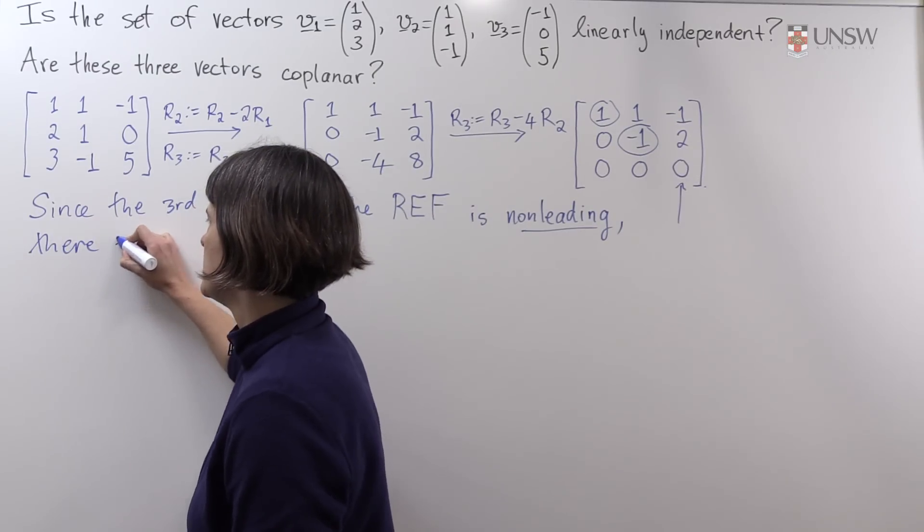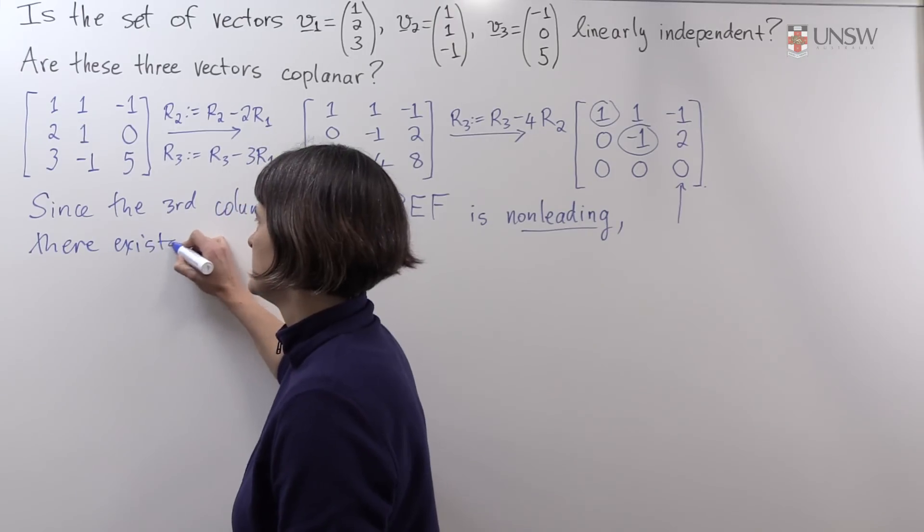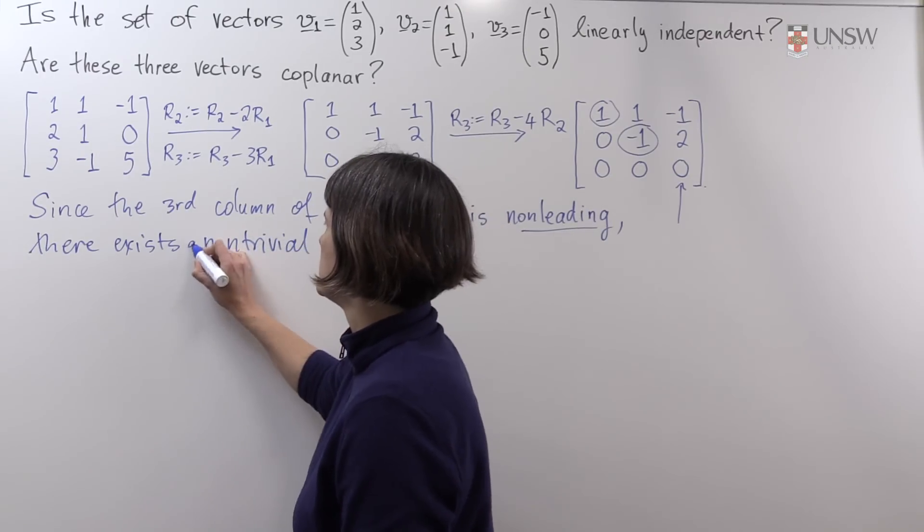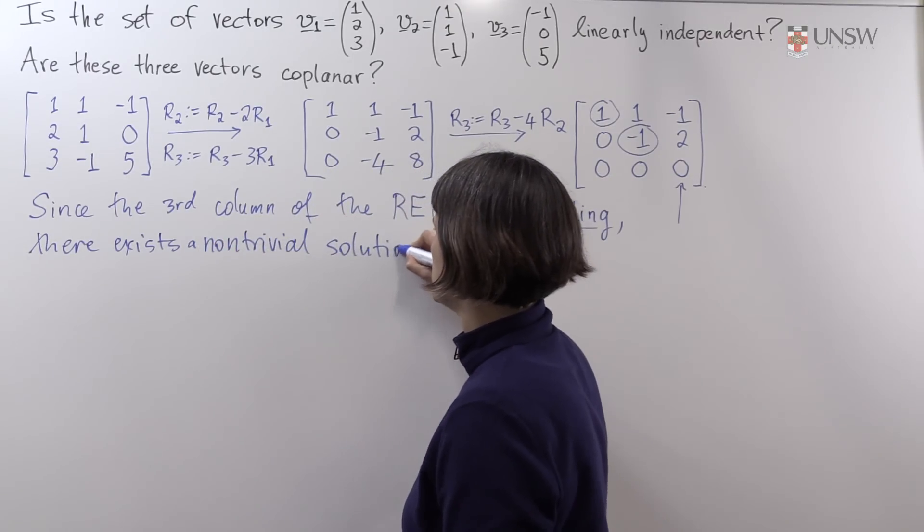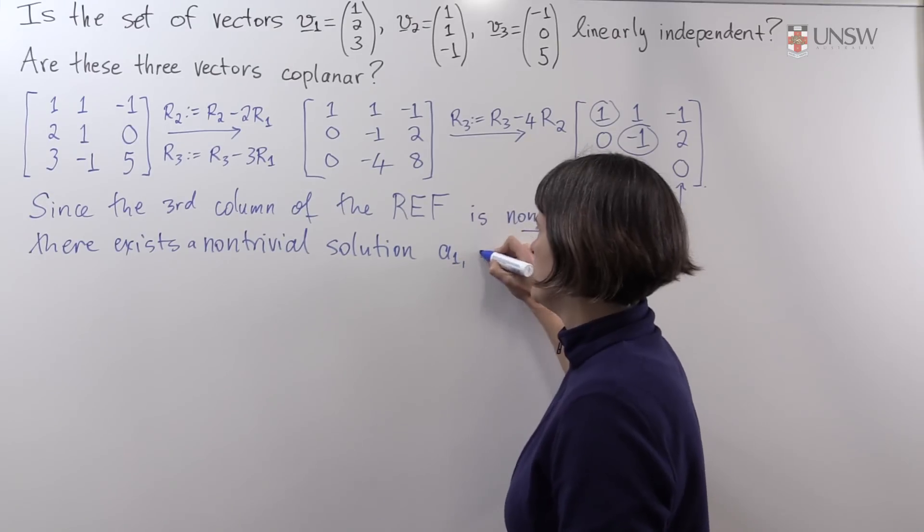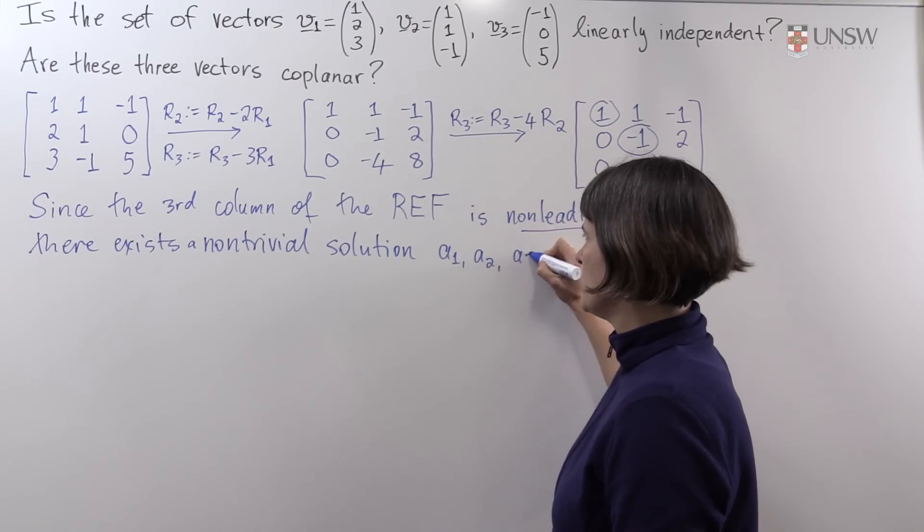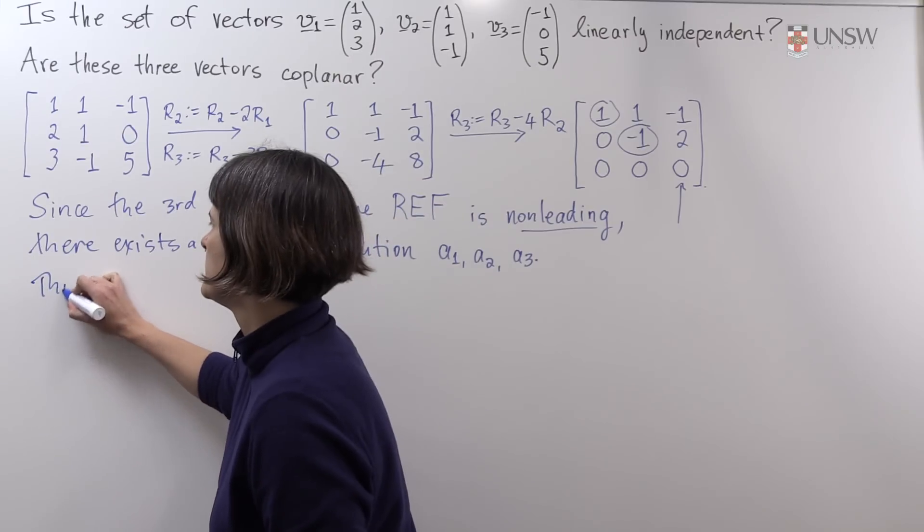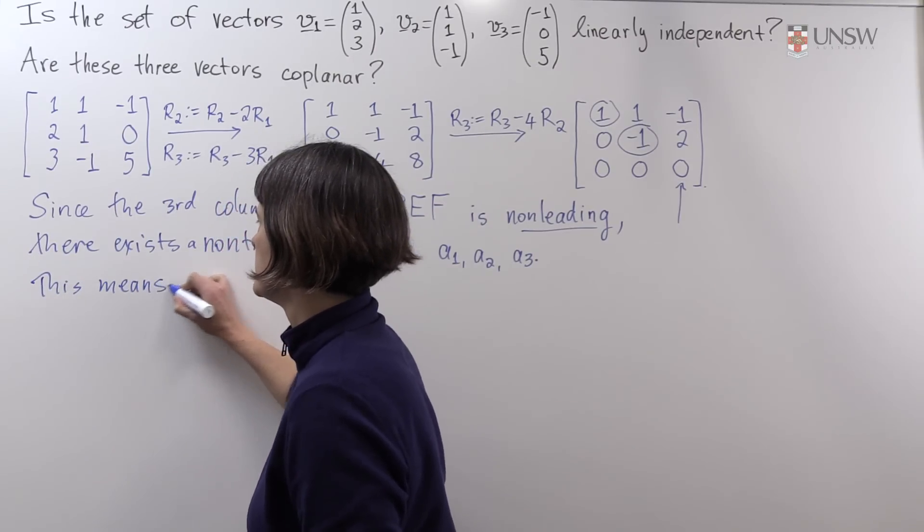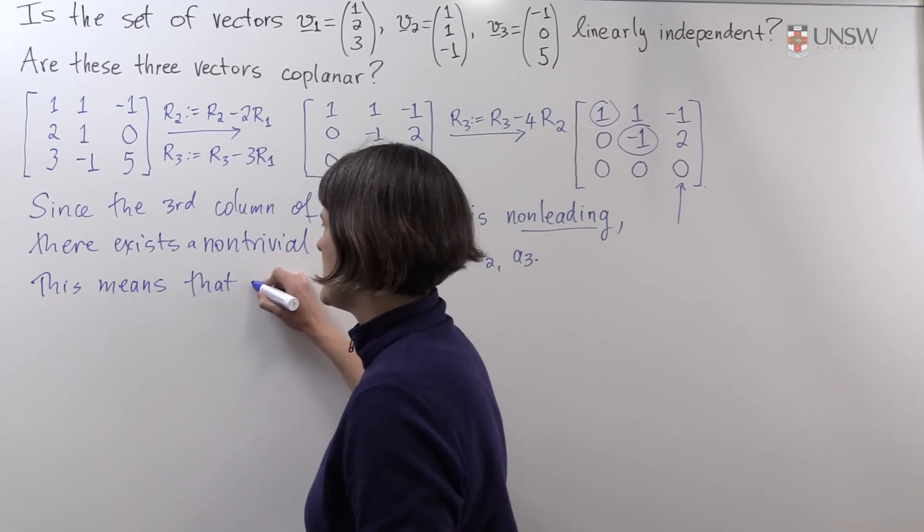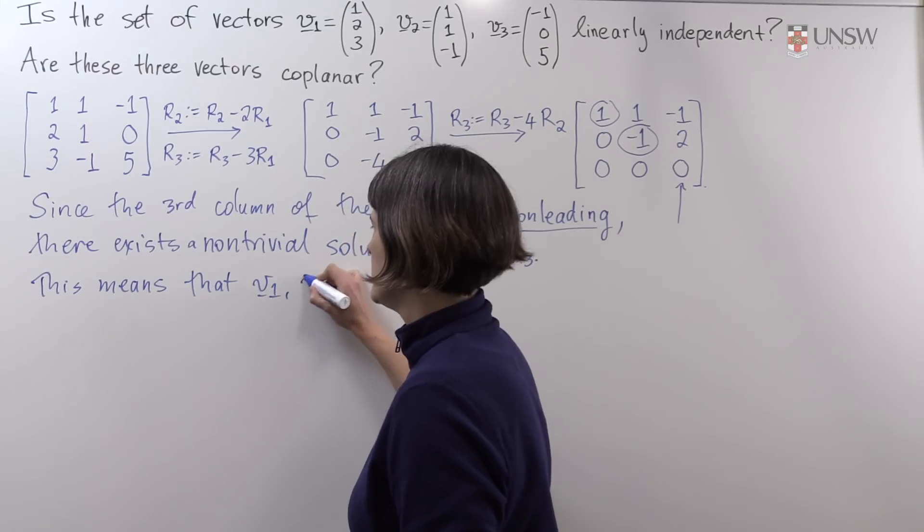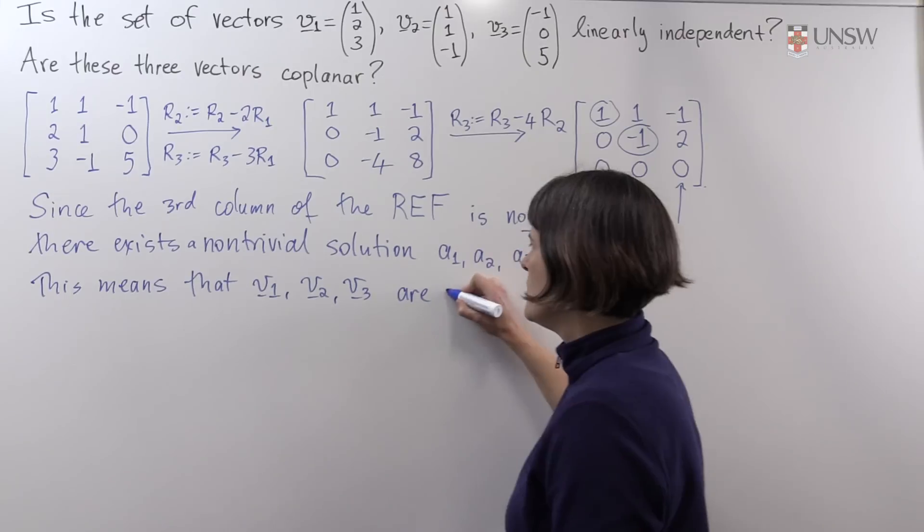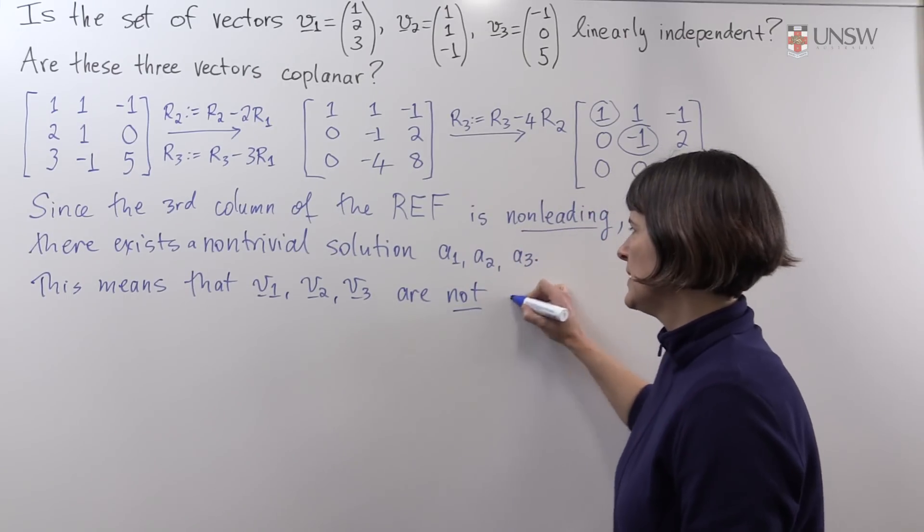There exists a non-trivial solution A1, A2, A3. And if you like, you could go ahead and find that. This means that V1, V2, V3 are not linearly independent.